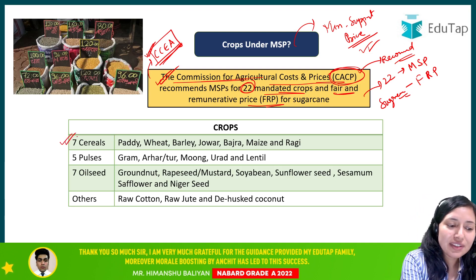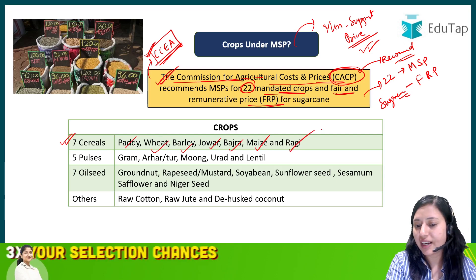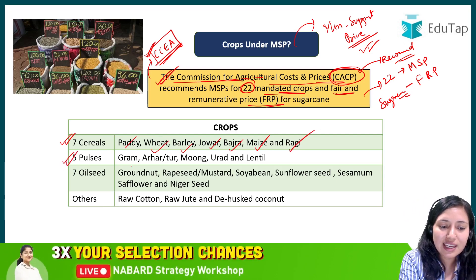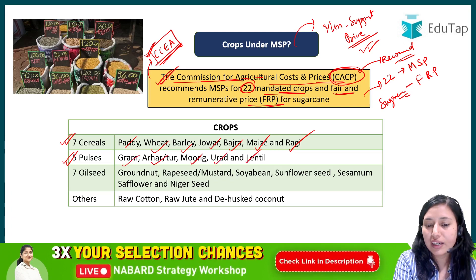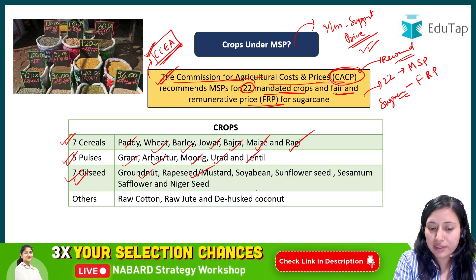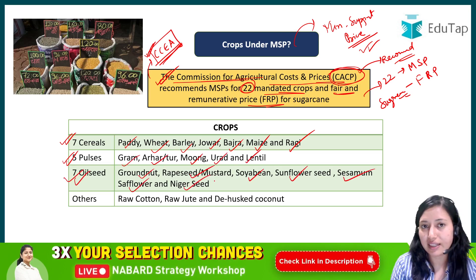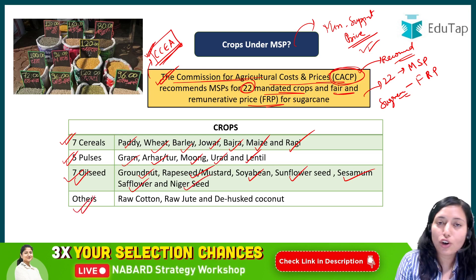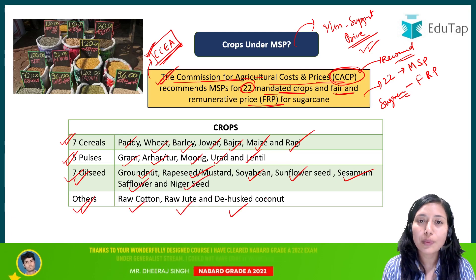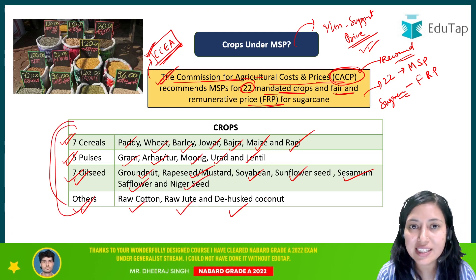There are 7 cereal crops: paddy, wheat, barley, jowar, bajra, maize, and ragi. Then we have 5 pulses: gram, arhar, moong, urad, and lentil. We have 7 oilseeds: groundnut, rapeseed/mustard, soybean, sunflower, sesame, safflower, and niger seed. Among other crops, we have raw cotton, raw jute, and de-husked coconut. These are the crops for which the MSP is announced.